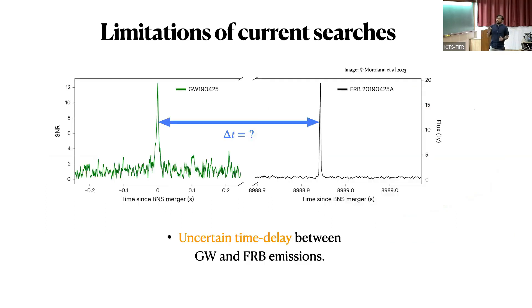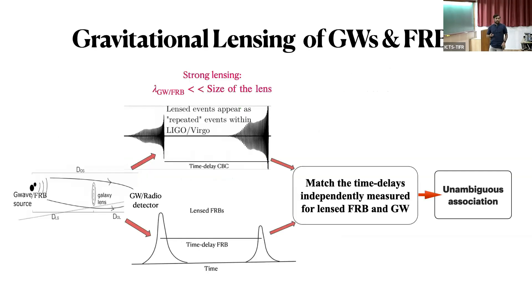Now the third limitation, which is the crucial one, is that you don't know the time after which the merger this signal is emitted. This is very uncertain. In fact, there are some models which claim that FRBs are being emitted in the pre-merger rather than post-merger. So there's a huge uncertainty. Can we bypass these uncertainties and find some more efficient way to search these associations?